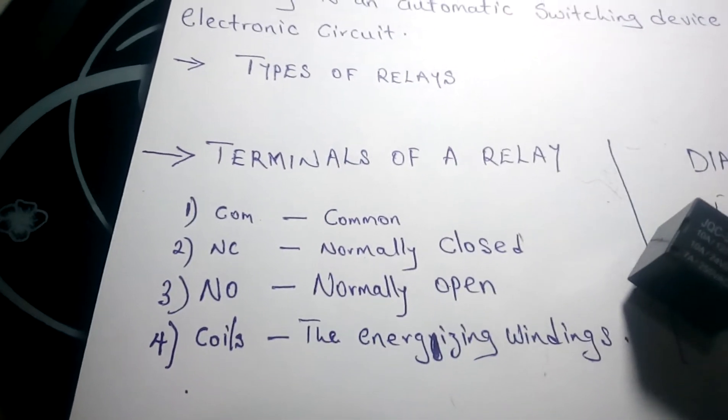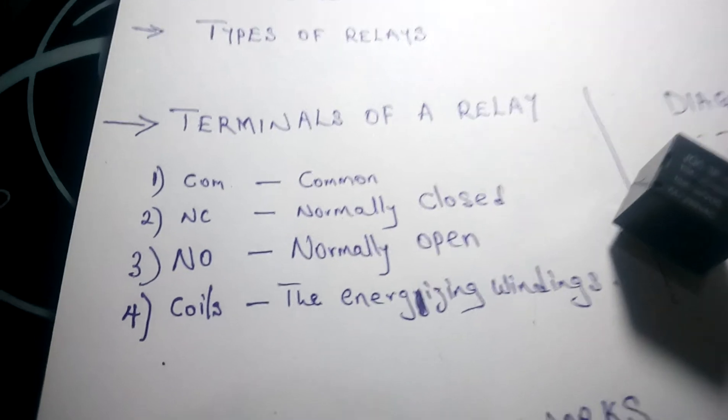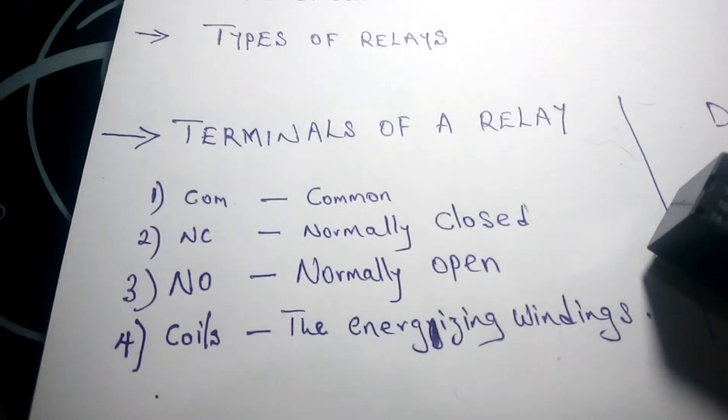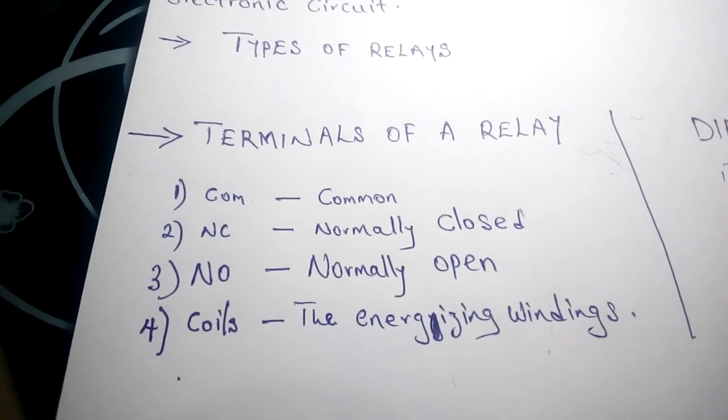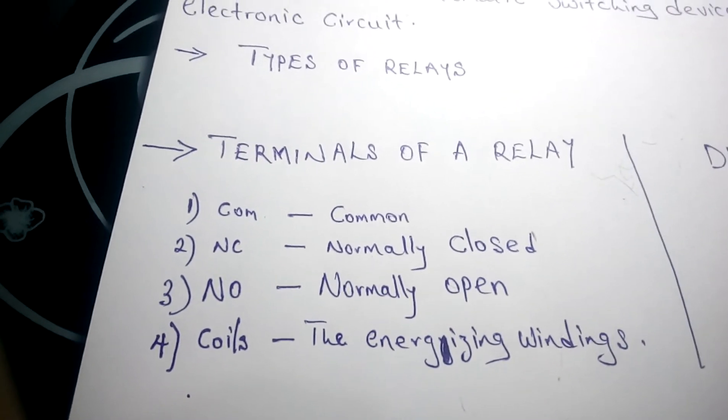Now the COM is common, which is where your load is connected to. Your NC means normally closed, and your NO means normally open. Coils is where you energize the relay from. I'll explain that in detail when we get to the practical point of the class.